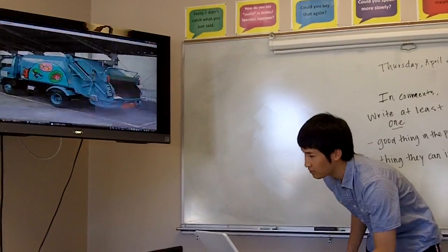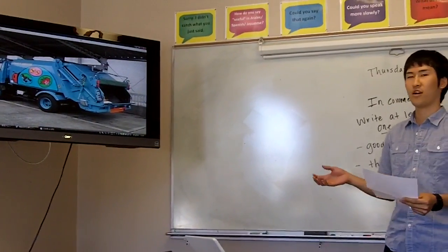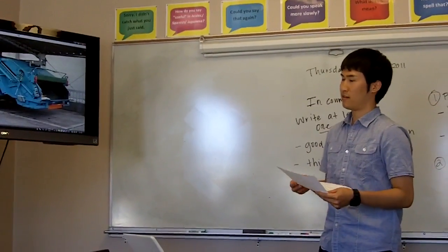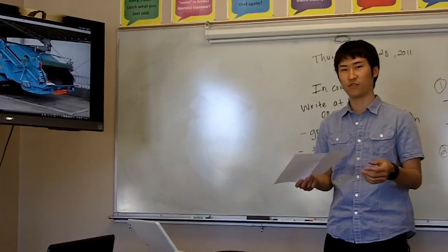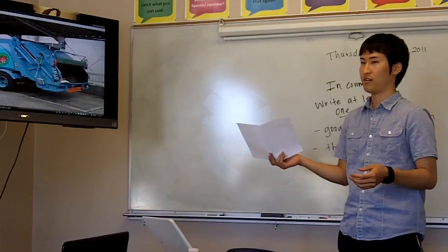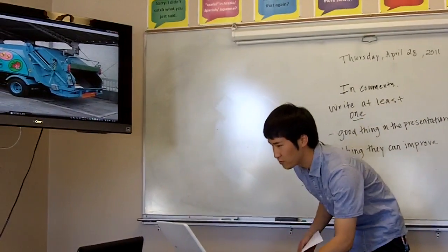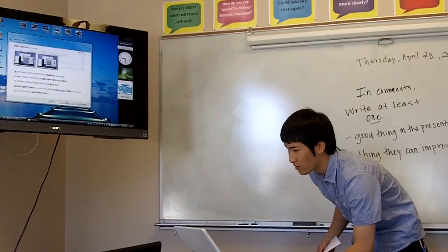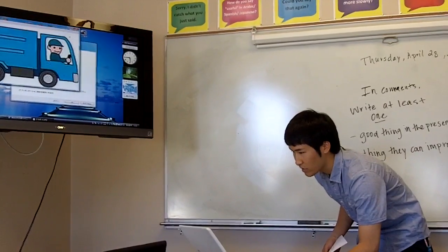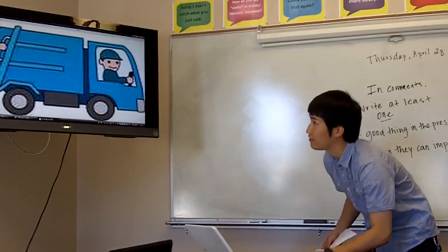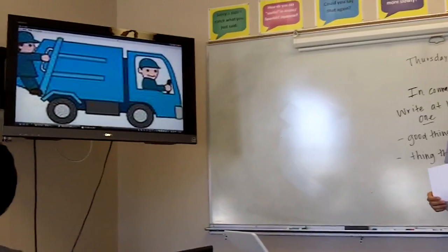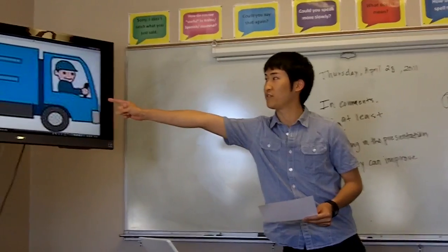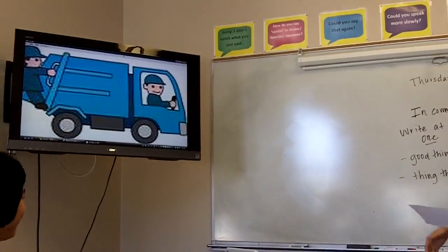In Japan, the garbage truck is very compact. There are two clean staffs on the car because they have to collect the garbage by hand. Like this? Yeah, yeah, yeah. Yeah, in Korea too, Korea too. So the staff have to collect the garbage. Yeah. I've never seen it.